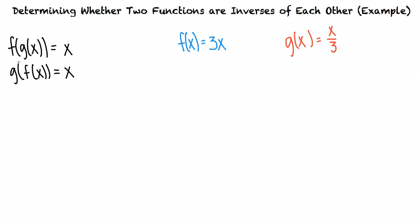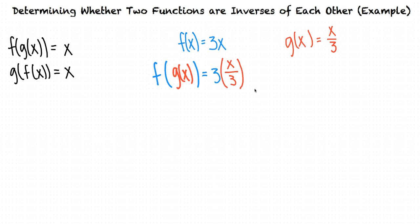We know the two functions are inverses of each other because we specifically found the inverse of the first function. Let's start by finding f of g of x. We can do this by taking f of x equals 3x and substituting g of x, which is x over 3, in for x. The threes will cancel out, and we're left with f of g of x equals x.